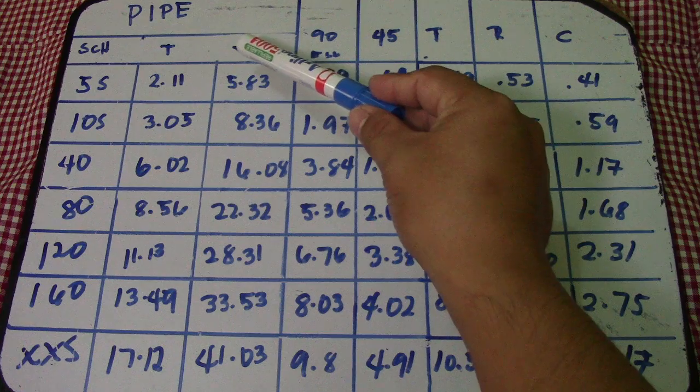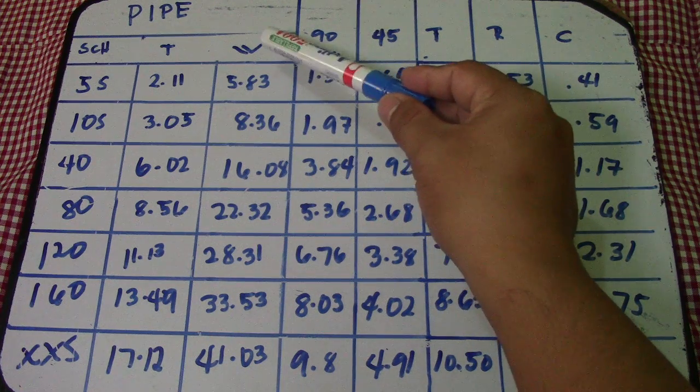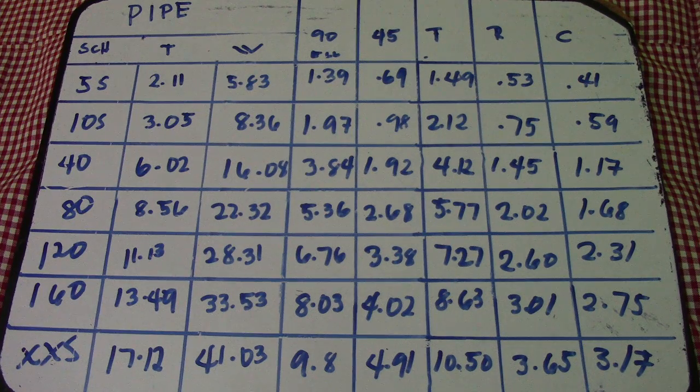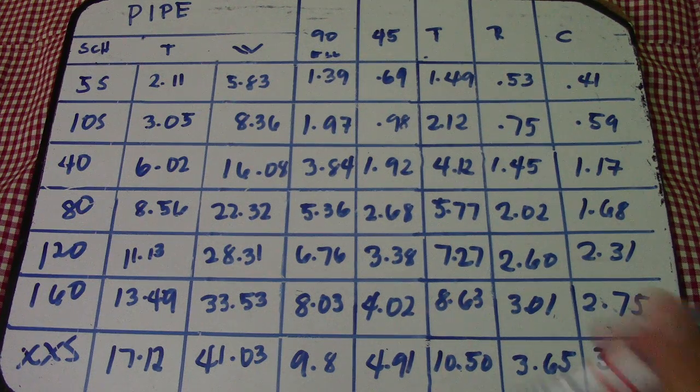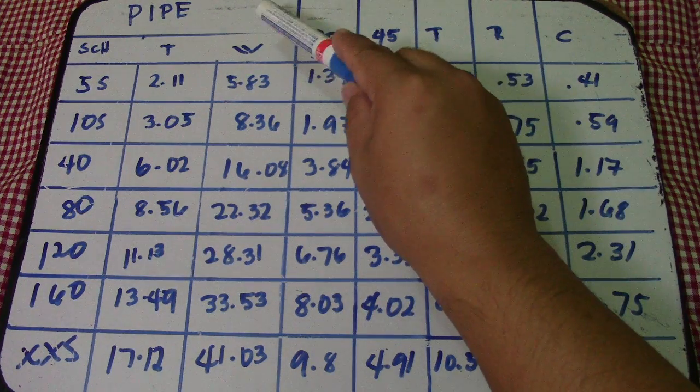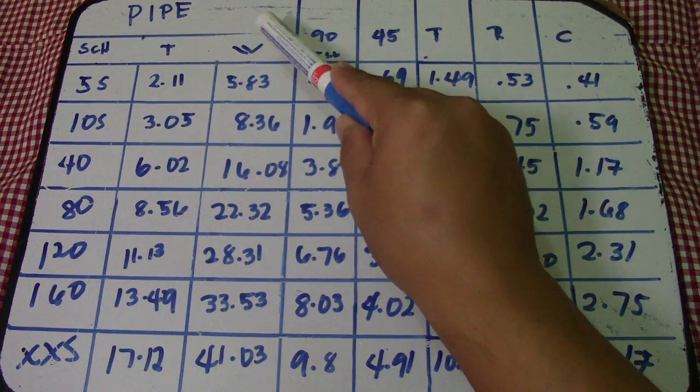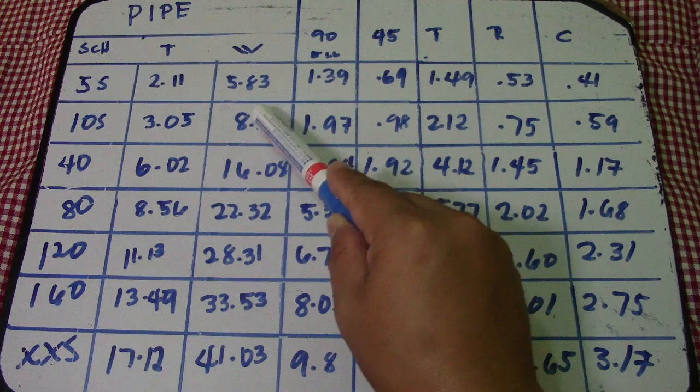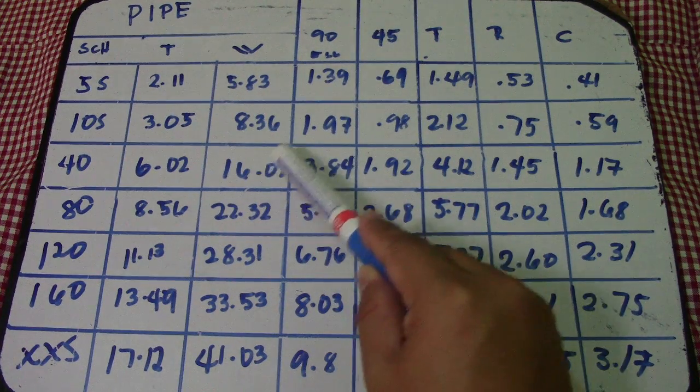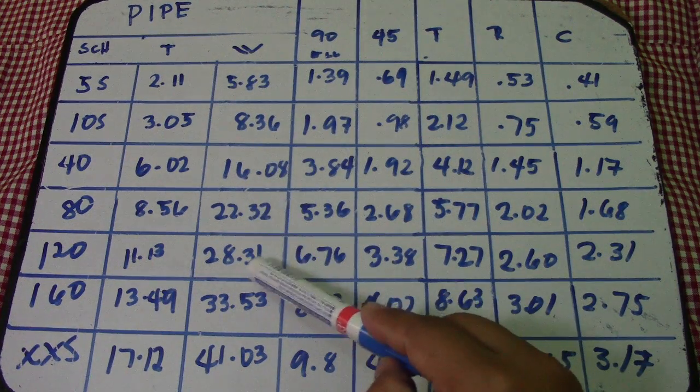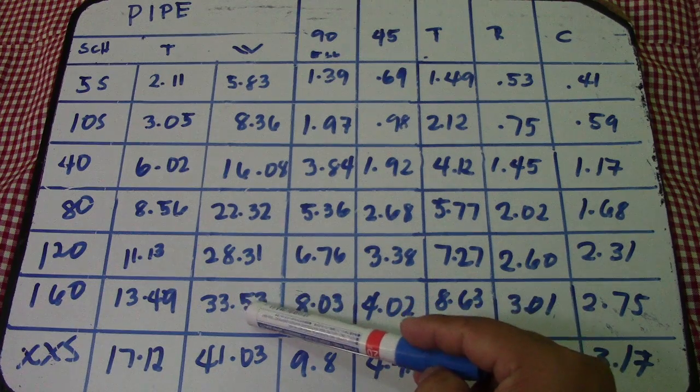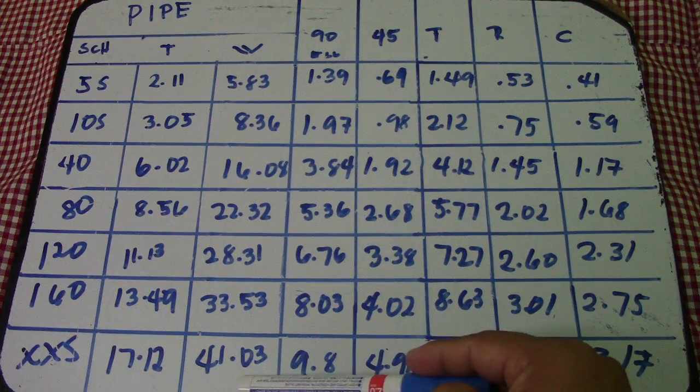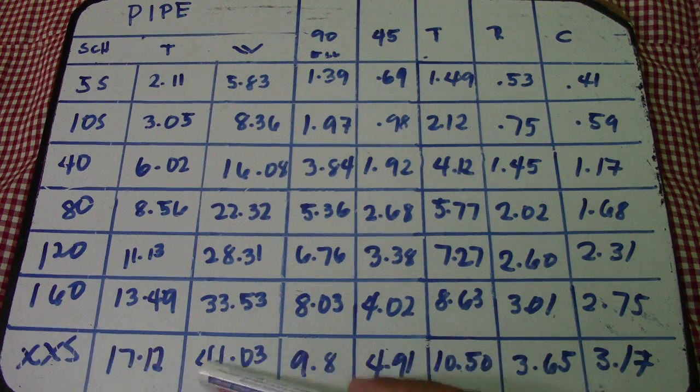Next column is weight. This weight is for kilogram per meter. Please take note for that. Next column is 5.83, 8.36, 16.08, 22.32, 28.31, 33.50, and 41.03 for extra strong.